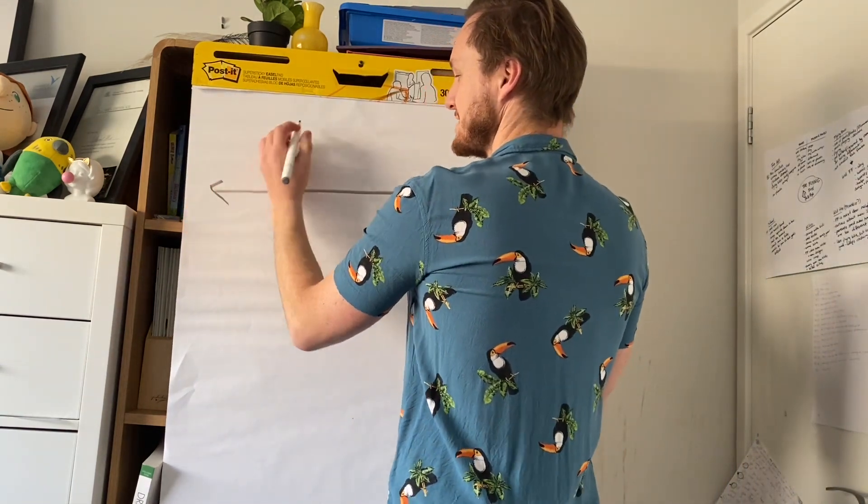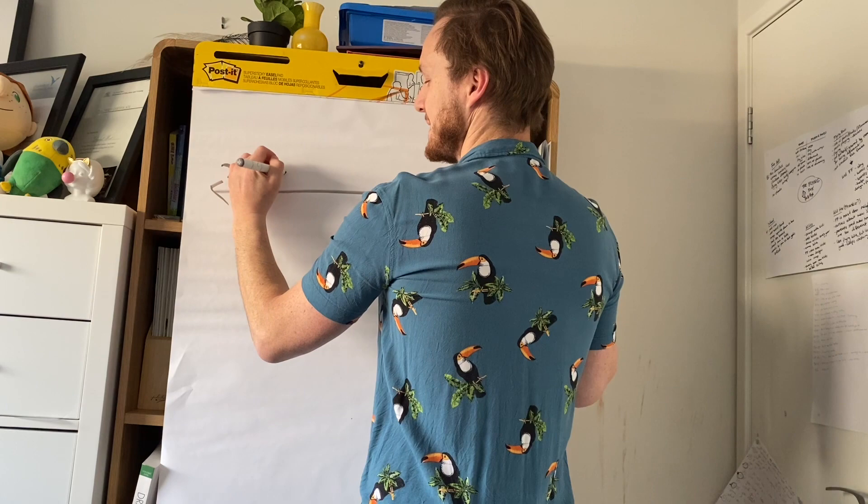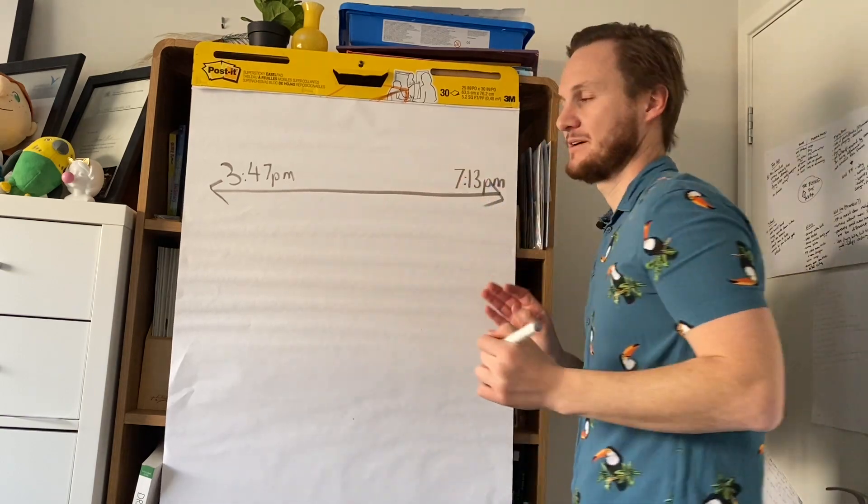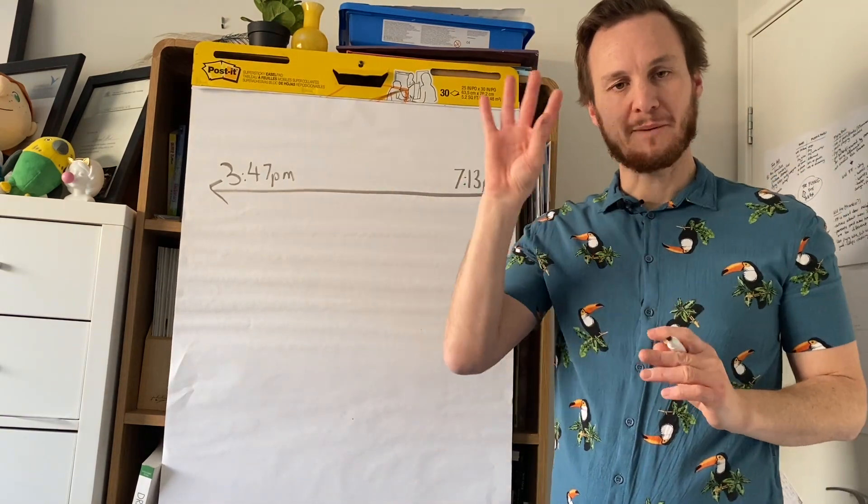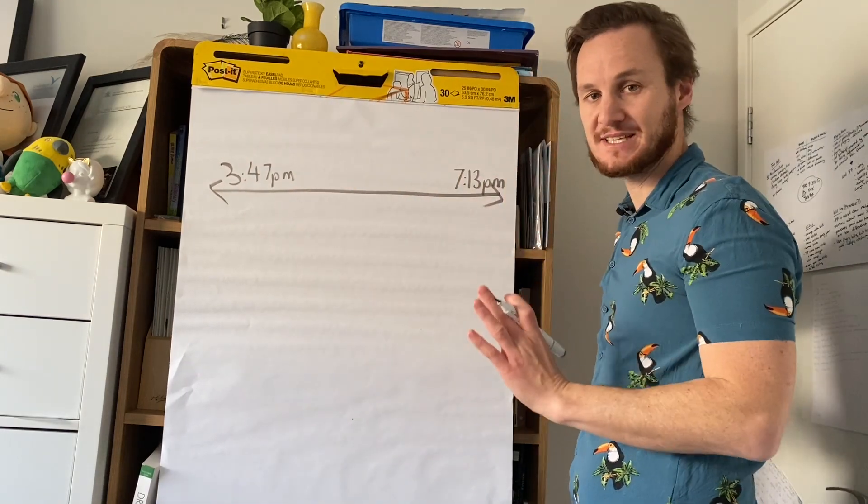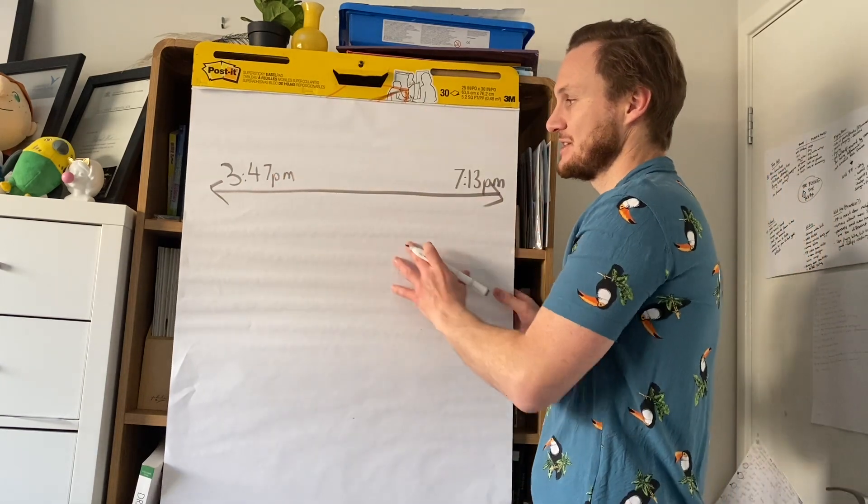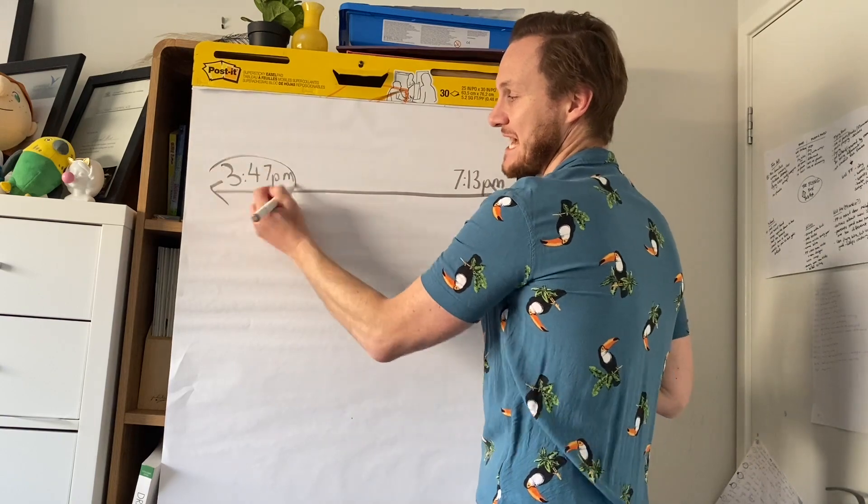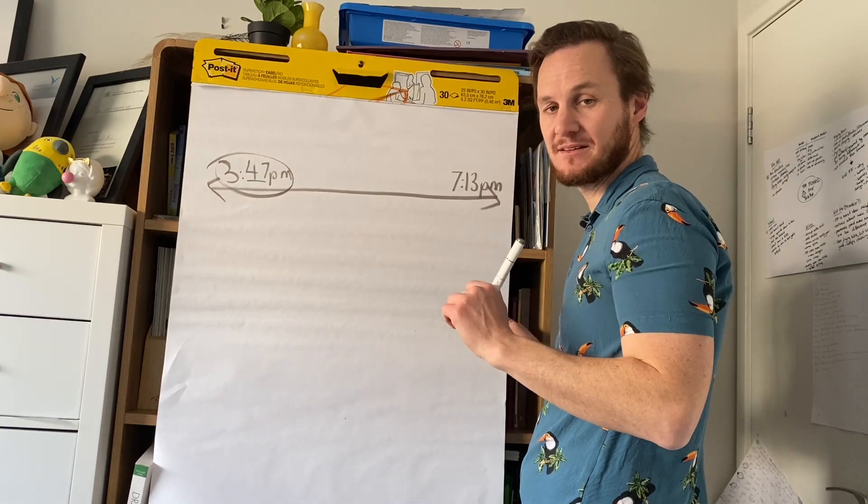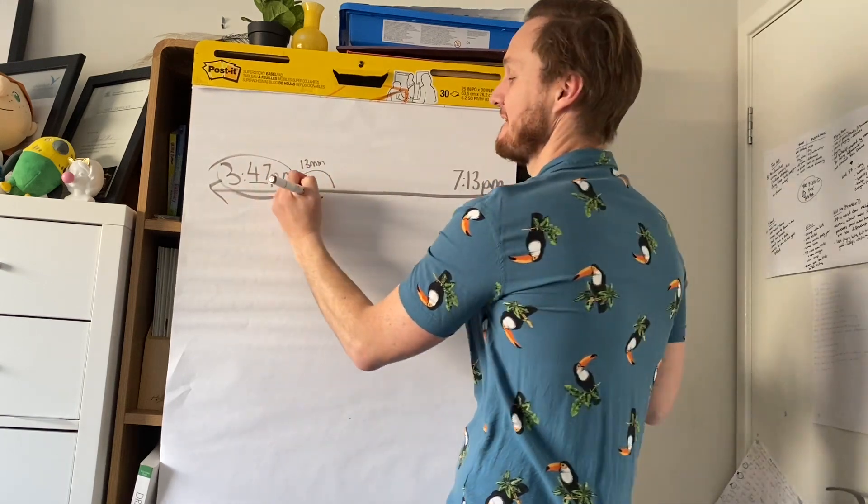So let's do one more. Let's say the party starts at 3:47 PM and finished at 7:13 PM. Remember what I said first - you could be able to just jump forward by yourself and just do this in your head, and that's great. If you can, well done. But I feel like it's going to be better for us to jump forward to the nearest hour. We want to get to the nearest hour first. So to get to the nearest hour, I need to get 13 more minutes. So I'm just going to jump forward 13 minutes, and the nearest hour is 4 o'clock.